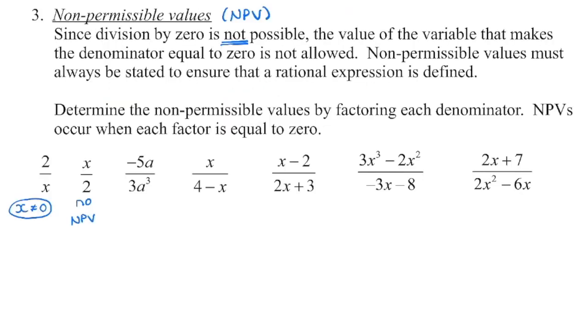NPV stands for non-permissible value. What are the values not allowed that would make that denominator zero? So we already established if we just see the variable x, it cannot equal zero. That is our non-permissible value. If we have a number on the bottom, there is no non-permissible value. You don't even have to look at the numerator. It's only the denominator that we want to make sure doesn't equal zero.